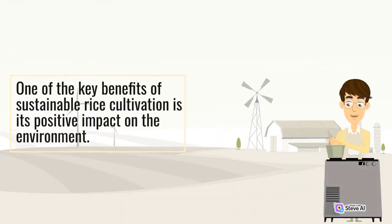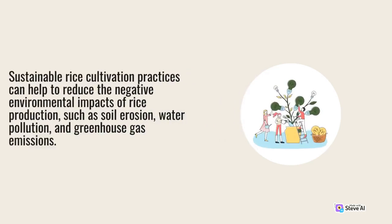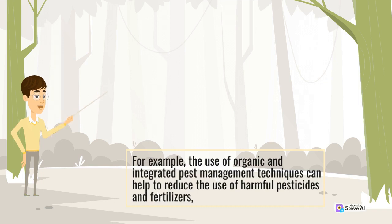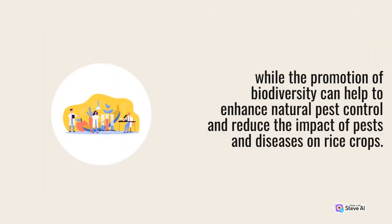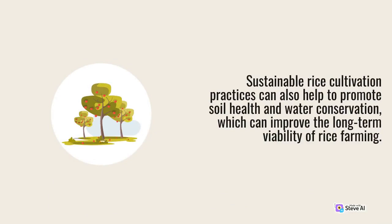One of the key benefits of sustainable rice cultivation is its positive impact on the environment. Sustainable rice cultivation practices can help to reduce the negative environmental impacts of rice production, such as soil erosion, water pollution, and greenhouse gas emissions. For example, the use of organic and integrated pest management techniques can help to reduce the use of harmful pesticides and fertilizers, while the promotion of biodiversity can help to enhance natural pest control and reduce the impact of pests and diseases on rice crops. Sustainable rice cultivation practices can also help to promote soil health and water conservation, which can improve the long-term viability of rice farming.